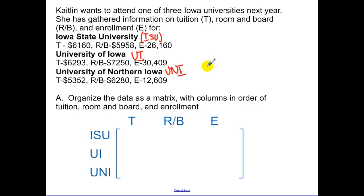So we're going to organize this into a matrix, and then we're going to do a few operations with that matrix. ISU's tuition is $6,160. Room and board for ISU is $5,958, and enrollment is $26,160. And then just keep organizing as we go along.